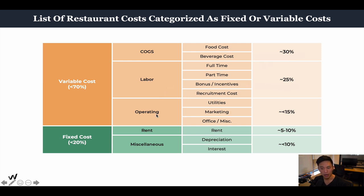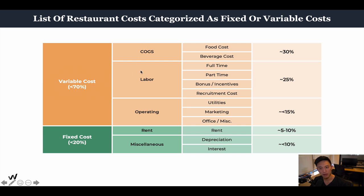For operating costs — utilities, marketing, office expense, miscellaneous — you may have other line items you can throw in here. We want to see from a high level where we're spending the most money and what percentage it accounts for. We don't want operating costs to account for more than 15%. If you're spending 20 to 30% on marketing, is it justified? These percentages are a rule of thumb, a benchmark to follow — not a golden rule. If you're at 32% cost of goods sold, just aim to decrease that percentage.